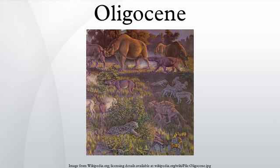Many groups, such as equids, entelodonts, rhinos, merycoidodonts, and camelids, became more able to run during this time, adapting to the plains that were spreading as the Eocene rainforests receded. The first felid originated in Asia during the late Oligocene and spread to Europe.